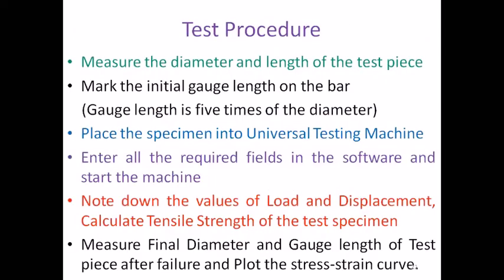Moving further, this is the procedure. First, measure the diameter and length of the specimen. Next, mark the initial gauge length on the bar. What is gauge length? It is 5 times of diameter. It is used to measure the extension of the bar. Then, place the specimen into universal testing machine. Then, fill all the required fields and start the machine. As it starts, it will show some values of load and displacement. And based on these values, that is load and displacement, we need to calculate the tensile strength of the bar, steel bar. And lastly, measure the final diameter and final gauge length of the test piece or specimen and plot the stress-strain curve.